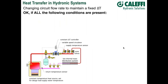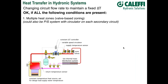What happens if we constrain our delta T — that is, have some control that holds delta T constant? This comes up often. It's acceptable and will work, but there are some constraints. First, you need a valve-based zoning system — that could be zone valves, thermostatic radiator valves, manifold valve actuators, or a primary-secondary system with a circulator on each secondary circuit. In other words, when a zone shuts off, we have less flow and less heat transfer. The second condition is low thermal mass.